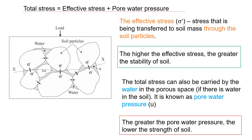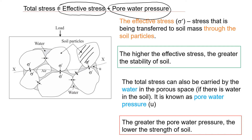The total stress acting on a soil element can be divided into two components: effective stress and pore water pressure. Effective stress is the stress transferred through the soil mass via contacts between soil particles. When loads are applied to the soil, they are transferred from particle to particle through these contact points.